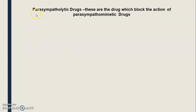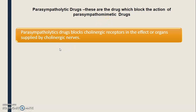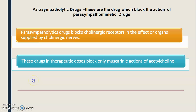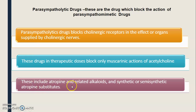First of all, what is meant by parasympatholytic drugs? Parasympatholytic drugs are drugs which block the action of parasympathomimetic drugs. They block the cholinergic receptors in the effector organs supplied by cholinergic nerves. In therapeutic doses, these drugs block only the muscarinic action of acetylcholine. These include the atropine-related alkaloids and synthetic or semi-synthetic atropine substitutes.